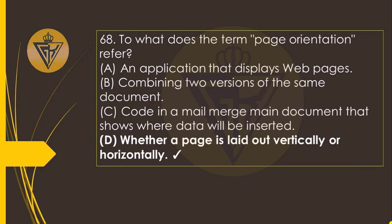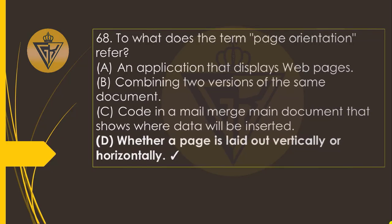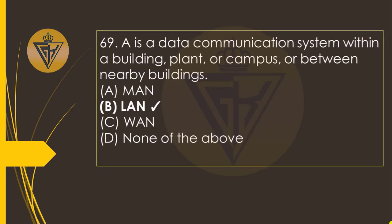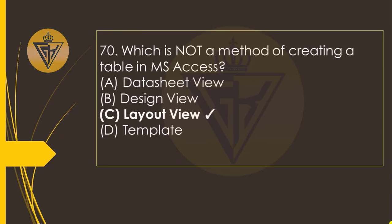To what does the term page orientation refer? The option D: whether a page is laid out vertically or horizontally. A data communication system within a building, plant, campus, or between nearby buildings is the option B: LAN. Which is not a method of creating a table in MS Access? The option C: Layout View.